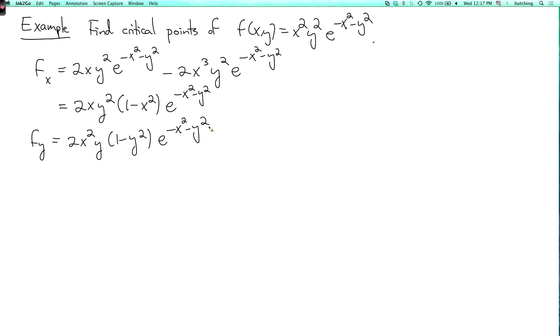So first of all, fx and fy are both divisible by x. So if x is 0 and y equals anything, then that's a critical point. So we have a whole line of critical points. And second, if y equals 0 and x is anything, because these are both divisible by y.